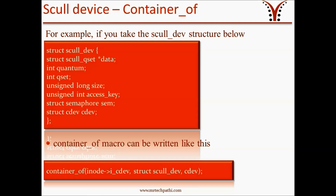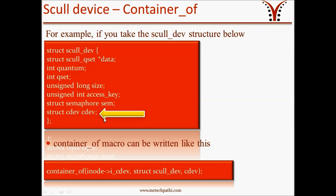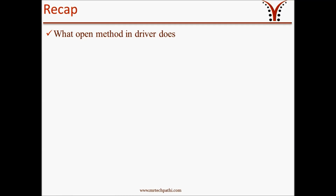In future, I will prepare a separate video on how container_of macro works. For the time being, remember that for our skull device, we receive a pointer to the cdev member when we call container_of macro. Just to recap: we learnt what open method in a driver does, and we learnt about container_of macro.